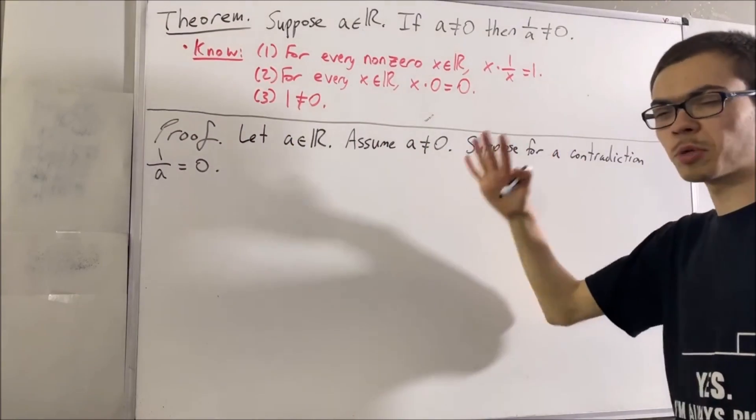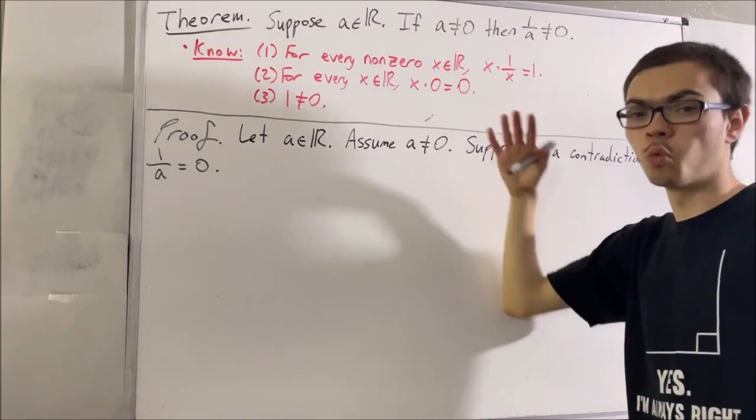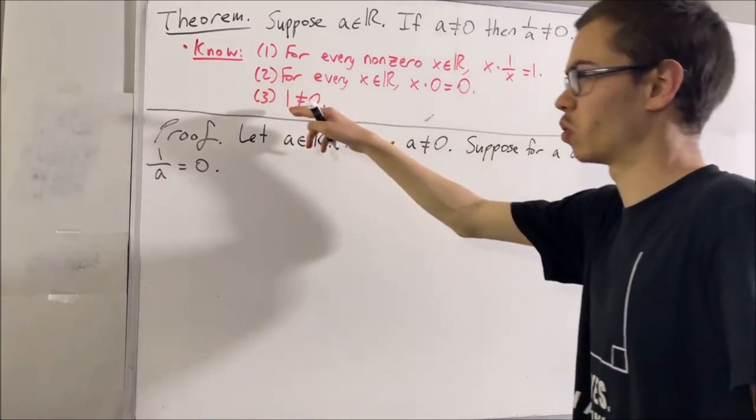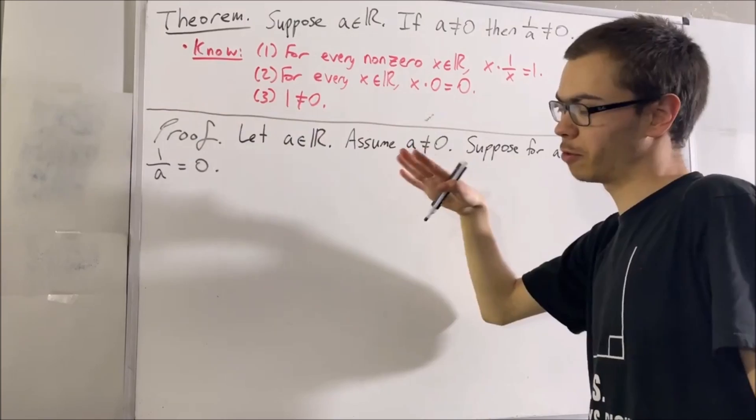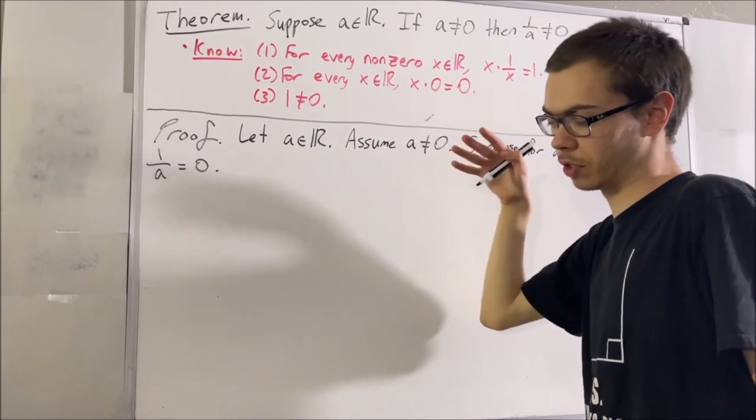Then we can establish a chain of equalities showing that one is equal to zero, which creates a contradiction because one is not equal to zero. To see how we can form that chain of equalities, check this out.